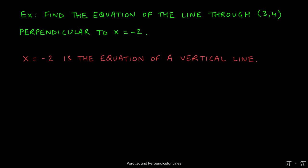This question is actually easier than it seems. As long as we recognize that x equals a constant is always going to represent the equation of a vertical line, we can recognize here that x equals negative 2 will therefore be the equation of a vertical line. This is x equals a constant.